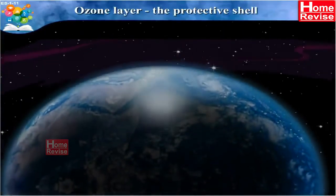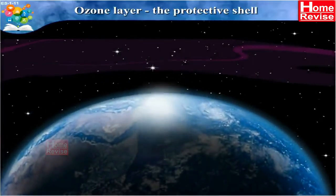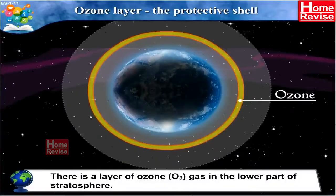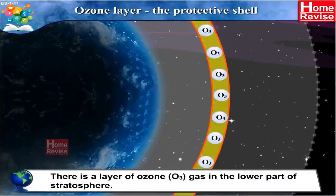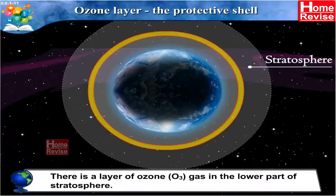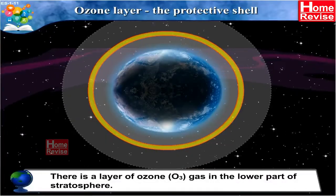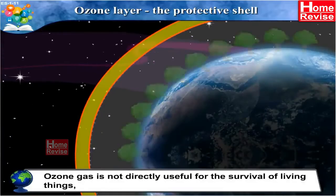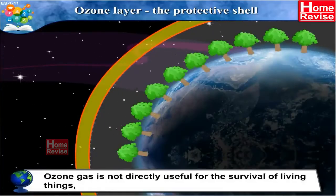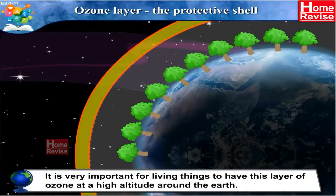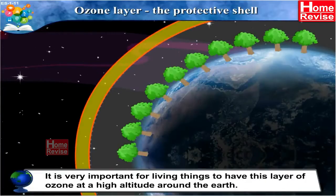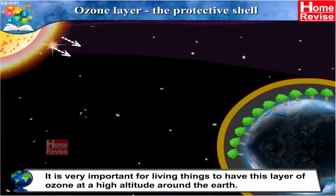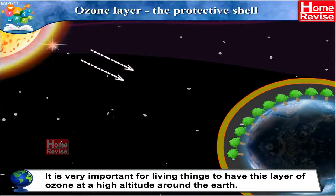Ozone Layer — The Protective Shell. There is a layer of ozone, i.e. O₃ gas, in the lower part of the stratosphere. Ozone gas is not directly useful for the survival of living things. Yet it is very important to have this layer of ozone at a high altitude around the earth.